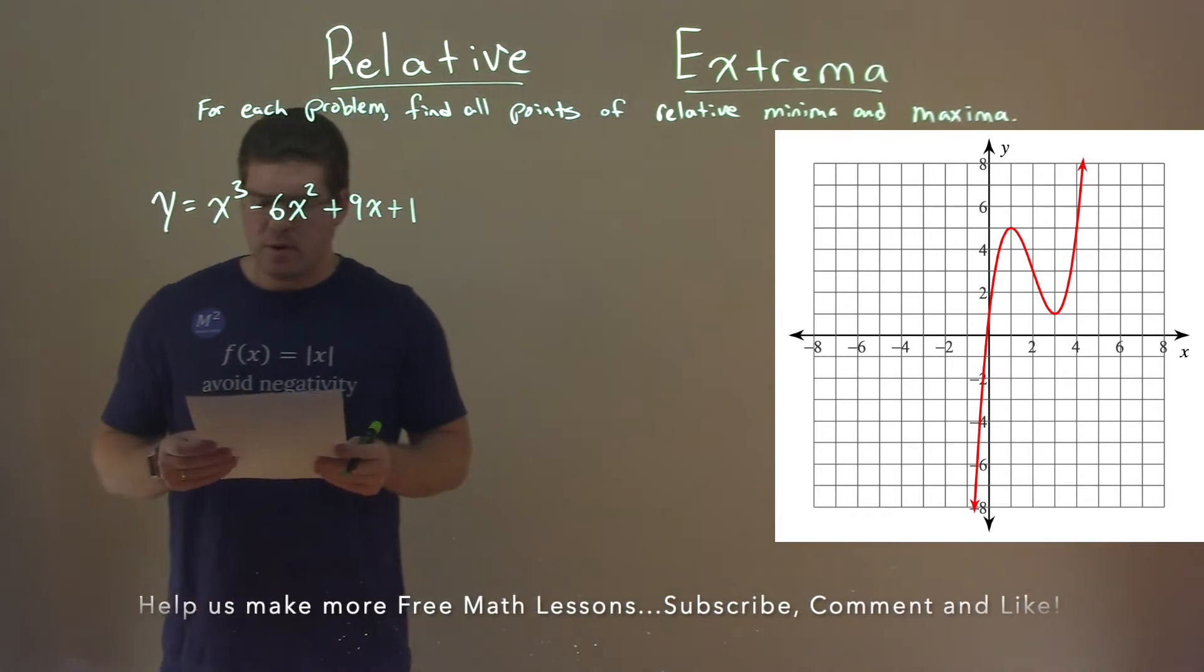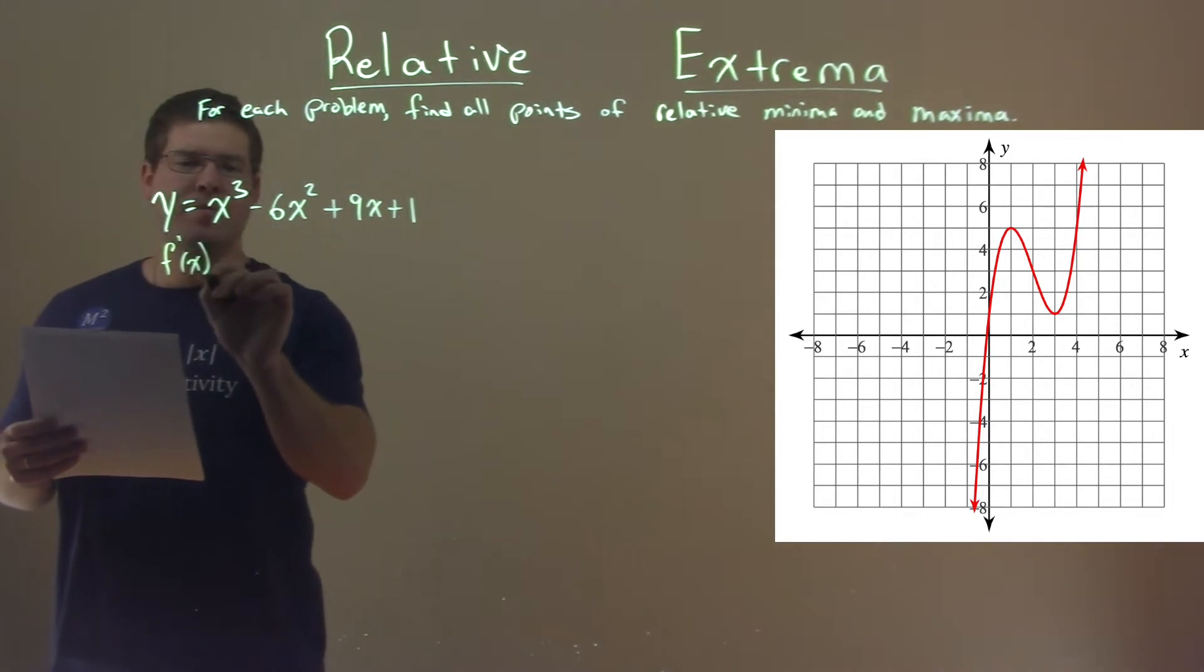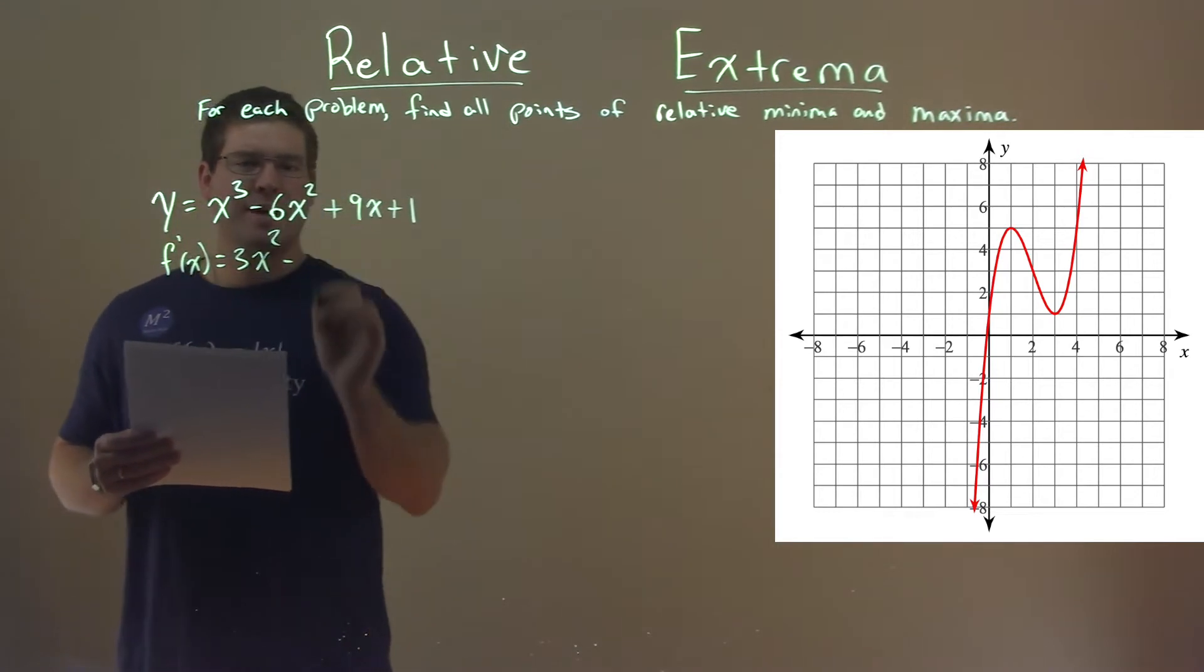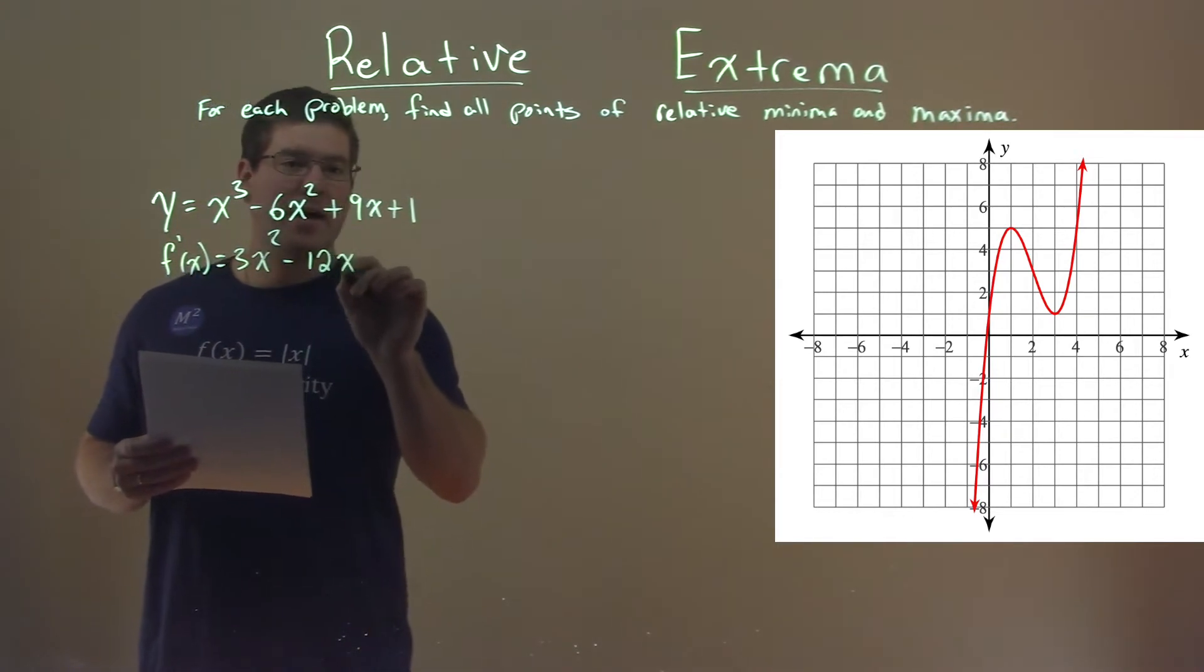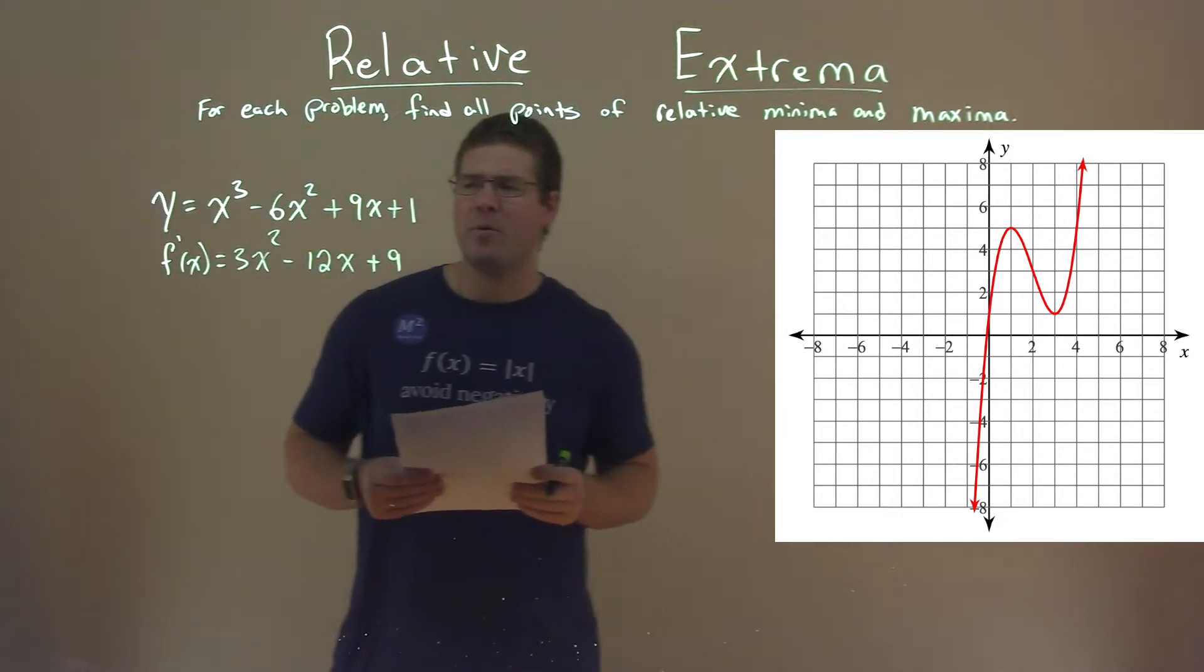Now, the first thing I want to do is find the first derivative. So here's our power rule, f prime of x here. 3 comes down, 3x squared, minus 2 times 6 is 12x, and then we just have the plus 9. Hopefully we're pretty good at doing the power rule now.